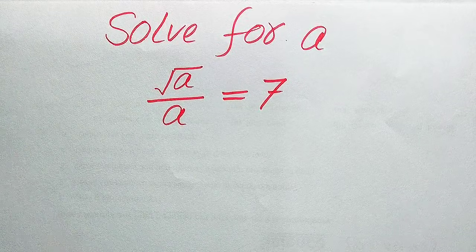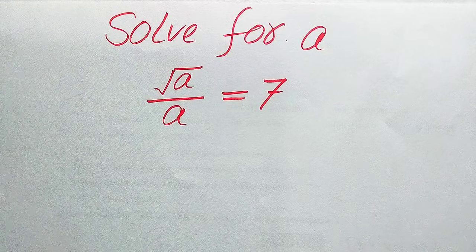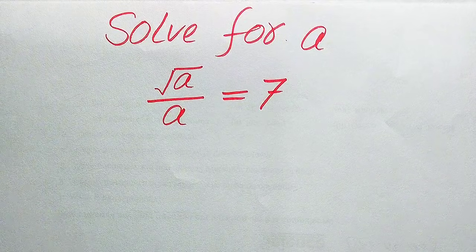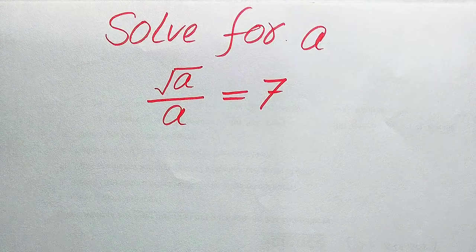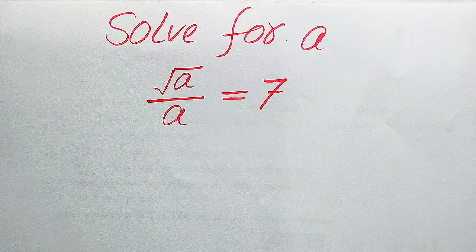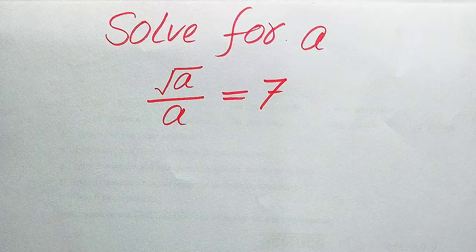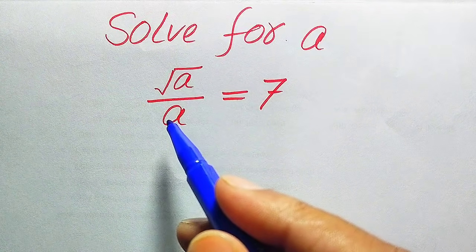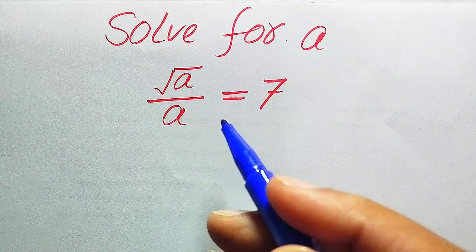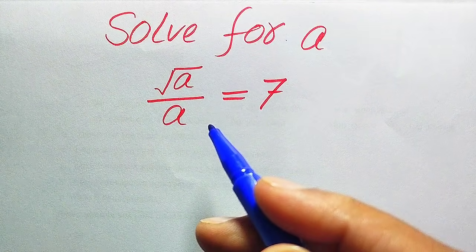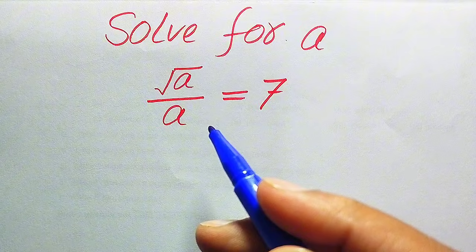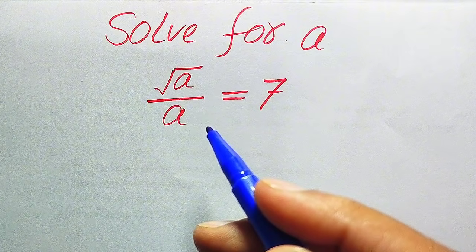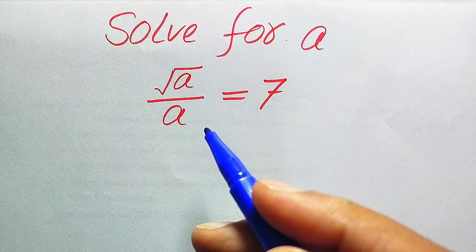Hello everyone. How to solve this problem: for what values of a, if we have square root of a divided by a equals 7, and we solve this problem for all the values of a.